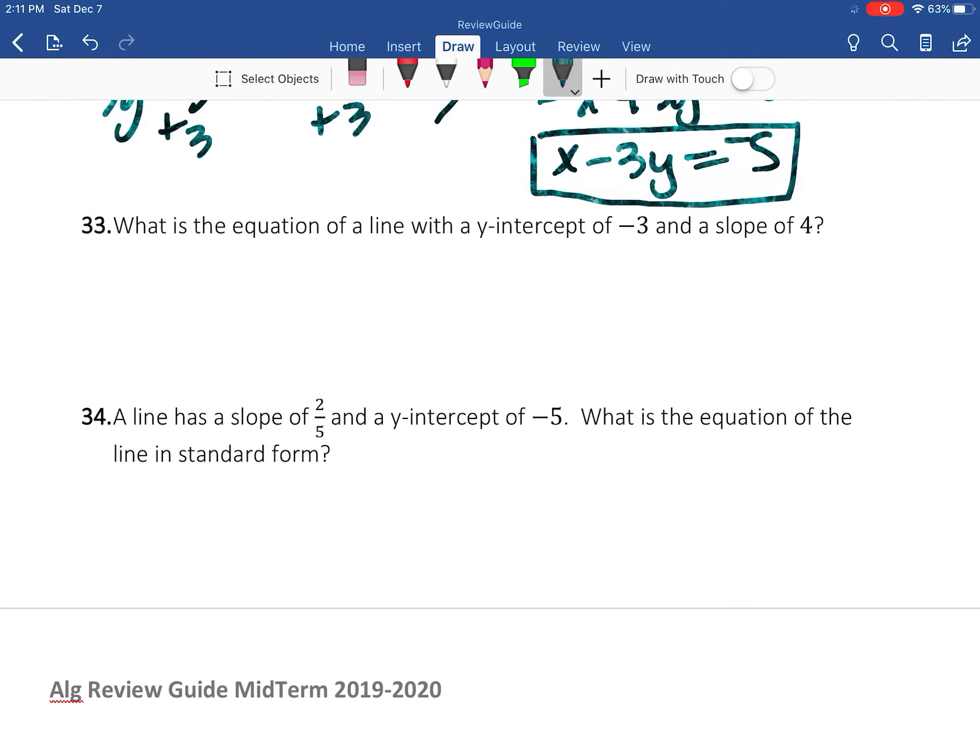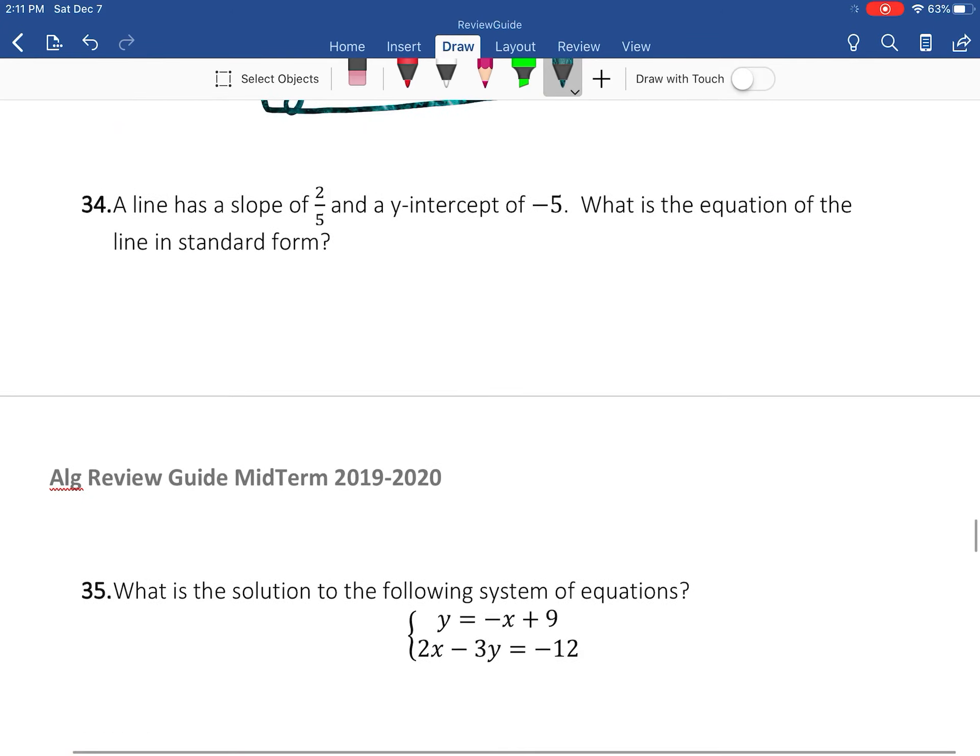Number 33. What is the equation of the line with the y-intercept of -3 and the slope of 4? So this is really easy. All we're doing is saying y = 4x, and then our y-intercept is -3. So that is the point (0, -3). This is our b value. b = -3. So that's going to be y = 4x - 3. It is that easy.